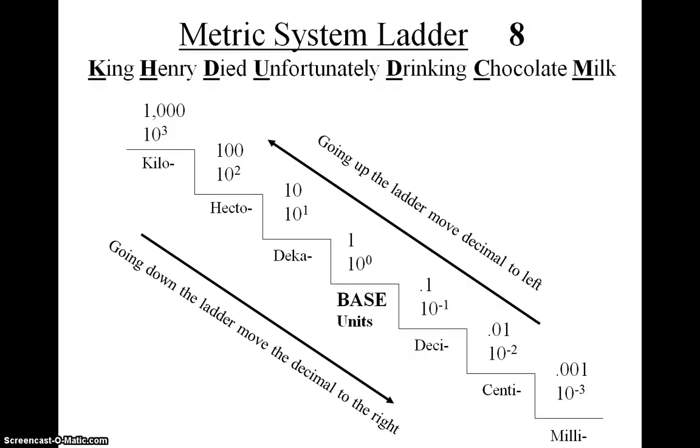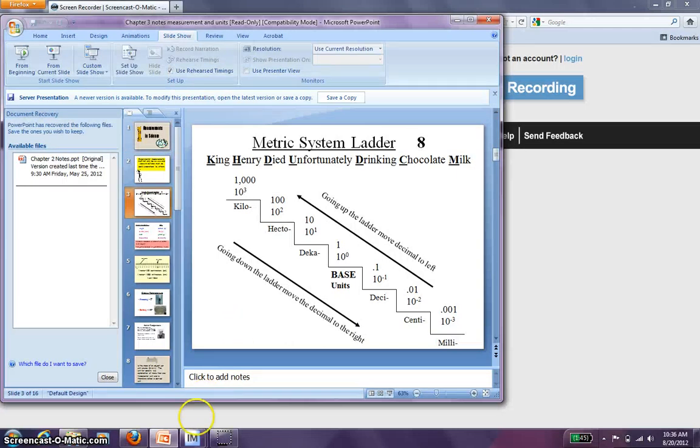And it's a base ten system so we're just dealing with moving decimal points either left or right. Kilo is a thousand, HECTO is a hundred, DECA is ten, and all the way down. So I'm just going to give you a couple of examples of making conversions using this metric ladder. And you'll do something in class and I think this should be review.